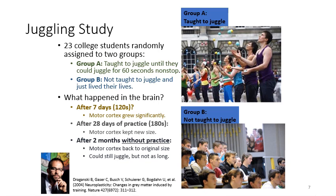After two months without practice, they lost some of their ability and their motor cortex declined, though they retained some procedural memory. What's notable is that when they were first learning the skill, they had to give a lot of attention and energy to it, and correspondingly that region of the brain grew. Once they stopped learning something new, their motor cortex retained those pathways but no longer needed all that energy to grow. Without practice, it returned to its original size.